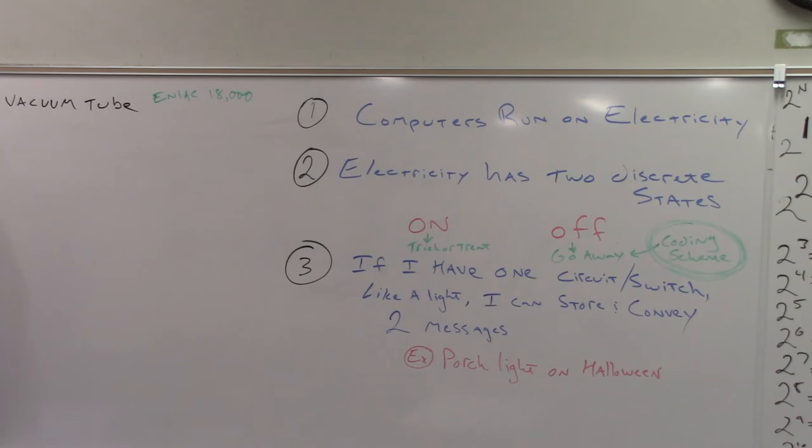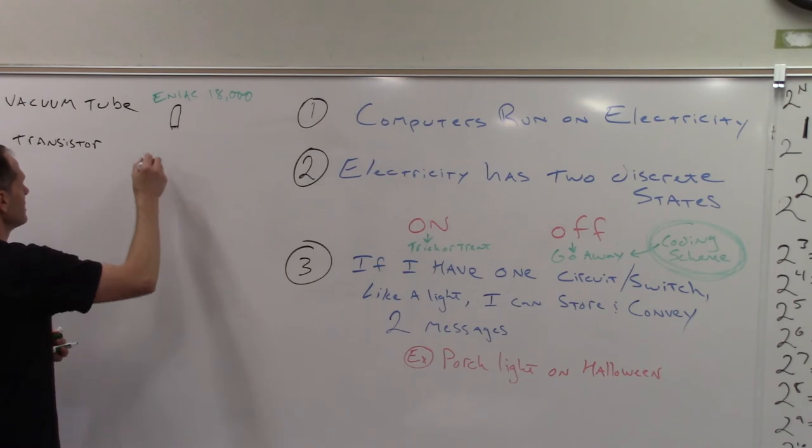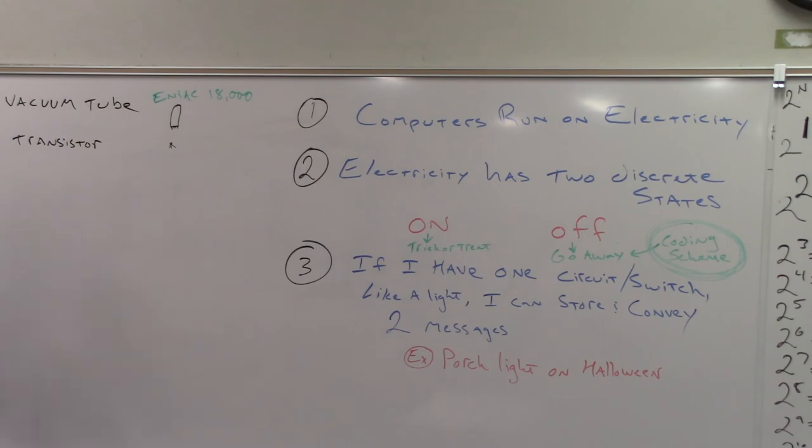And then gen two was characterized by a transistor. So circuit switch, transistor. Those were smaller, ran cooler. A vacuum tube looked kind of like that. And a transistor looked like this. These burned out. They were kind of like light bulbs. Those didn't. This is just something that could hold a circuit in an on-off state.